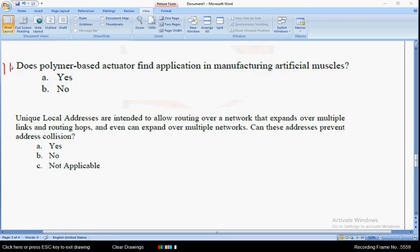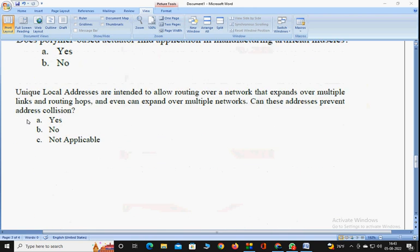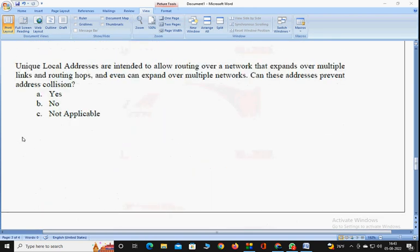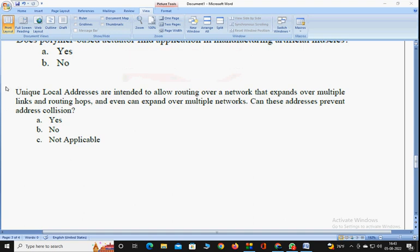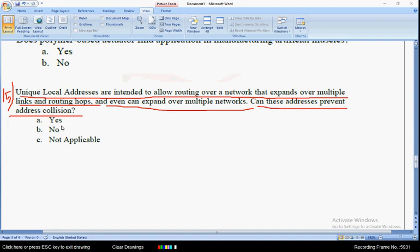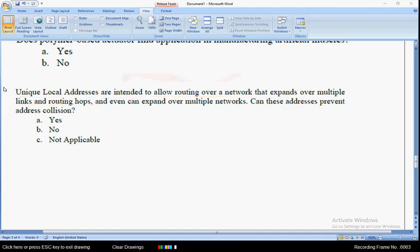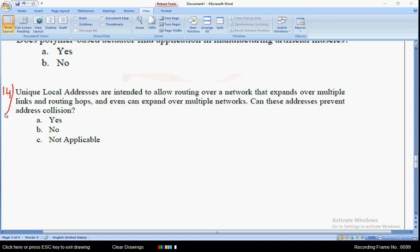Coming on to the fourteenth question: unique local addresses are intended to allow routing over a network that expands over multiple links and routing hops and even can expand over multiple networks. Can these addresses prevent address collision? The answer for the fourteenth question is option B: no.